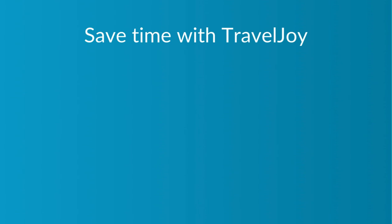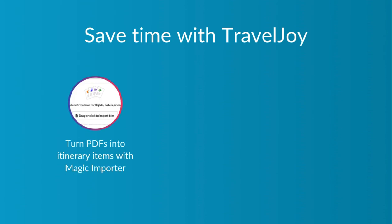Let's look at three powerful features in Travel Joy's Itinerary Builder that make it possible. With Magic Importer, you can instantly turn PDFs of flight, hotel, cruise, and activity confirmations into editable itinerary items. It's fast and completely eliminates the need for manual data entry.